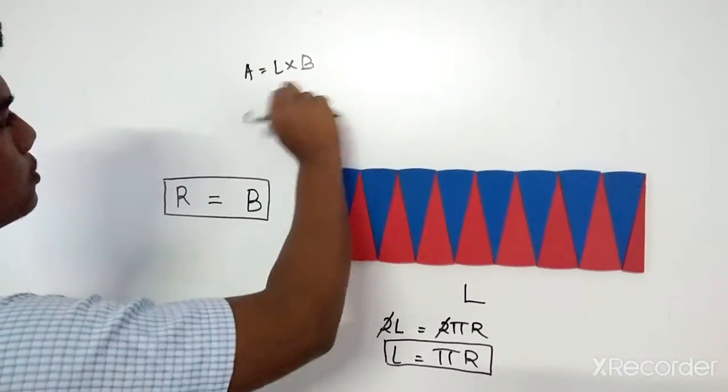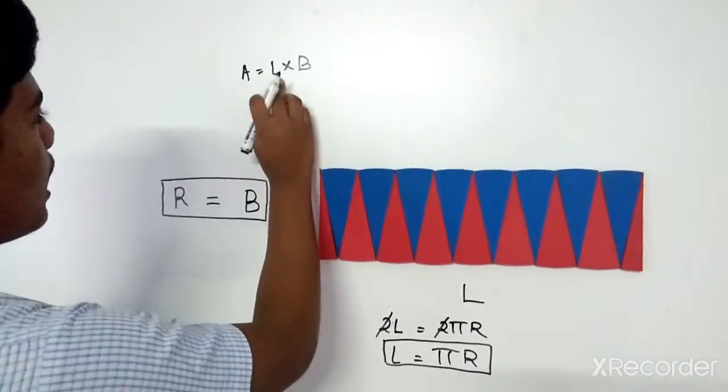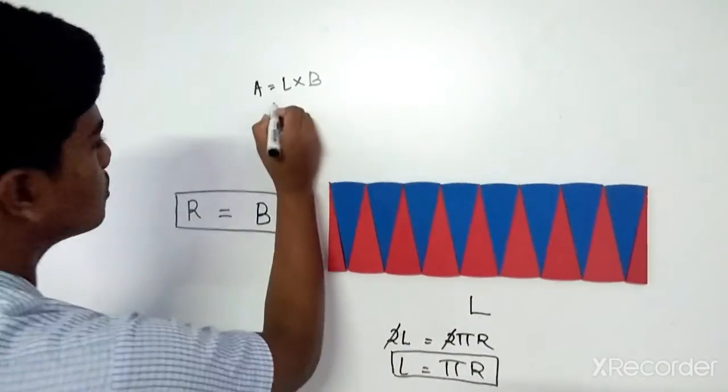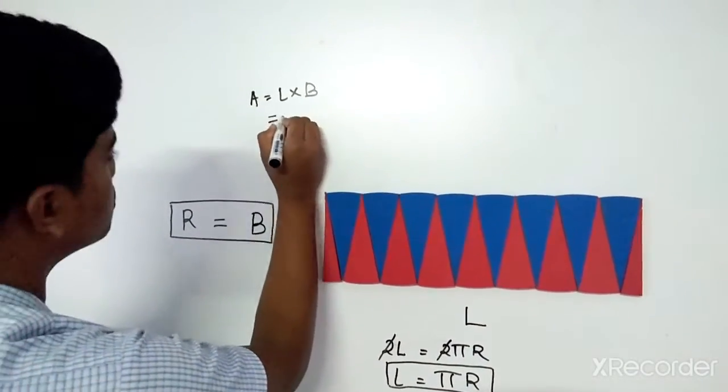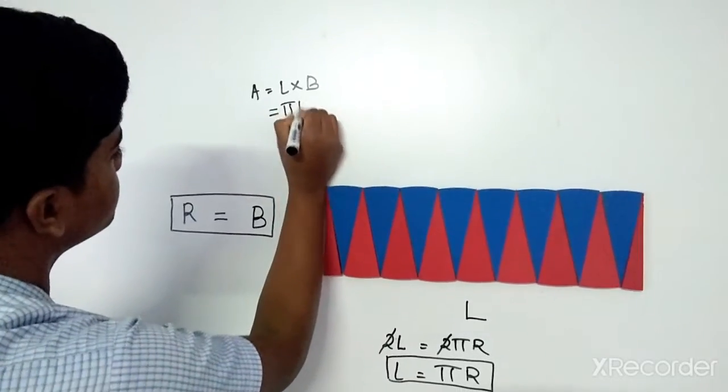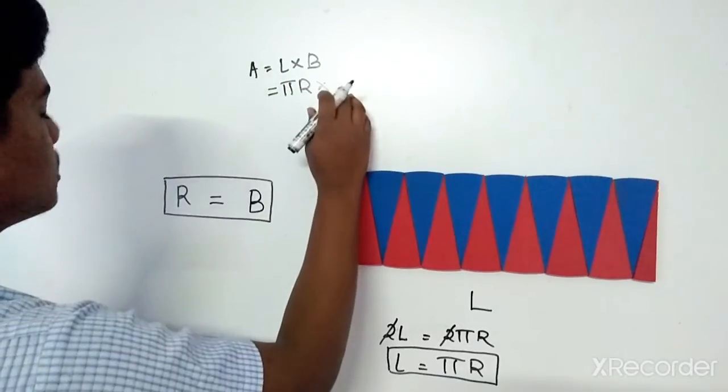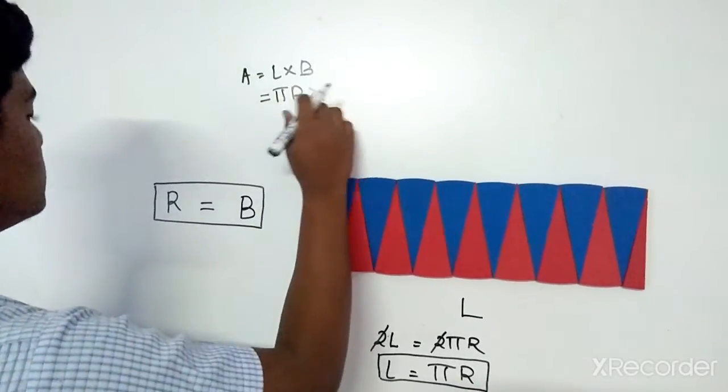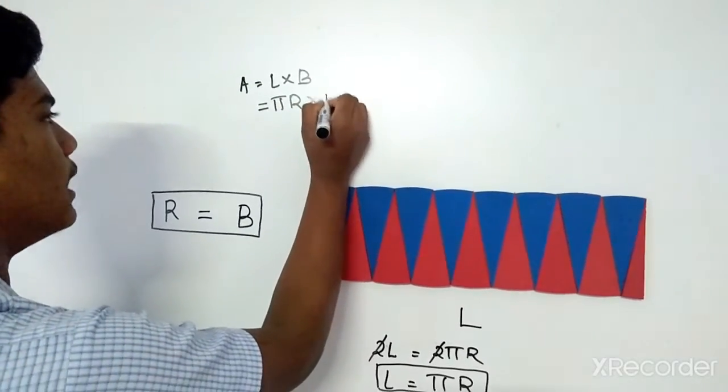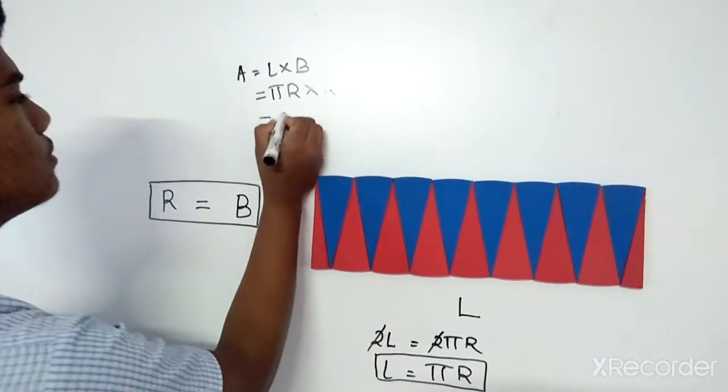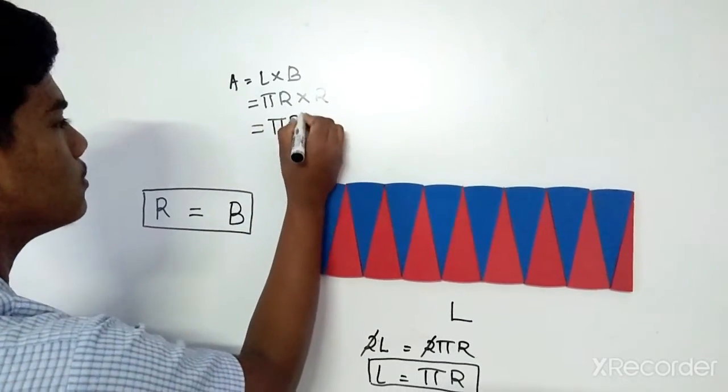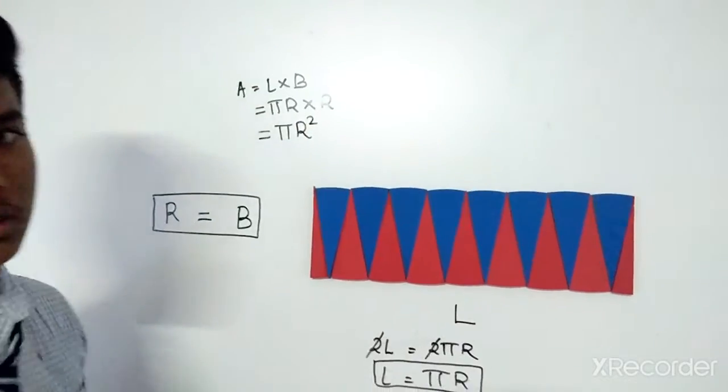This is the length of the rectangle. Now, I put length is equal to pi r and into breadth, I put breadth is equal to r. Now, sum of pi r square.